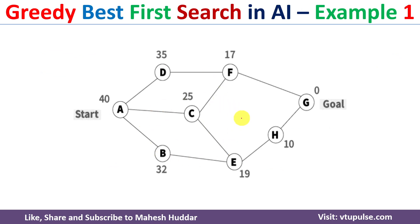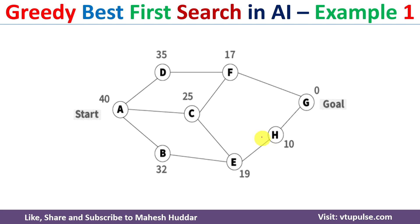Let us assume that we have been given this graph, where A is the initial state or the start state and G is the goal state. The values written on the top of each node are the heuristic values, or the estimated cost from a given node to the goal node. For example, 40 indicates the estimated cost from node A to the goal state G, and 35 indicates the estimated cost from node D to the goal node G. All heuristic values are written on the top of each node.